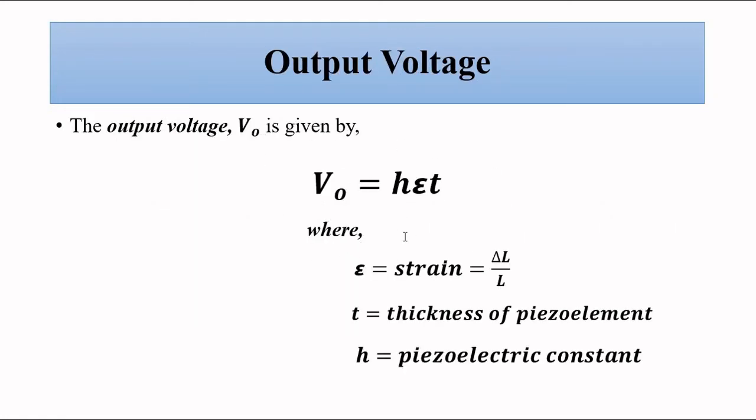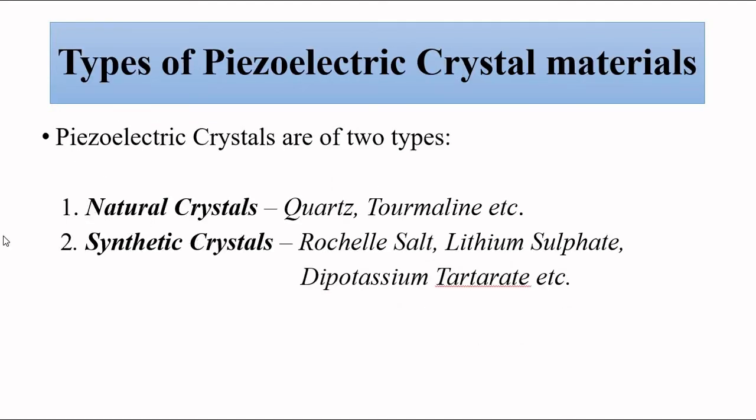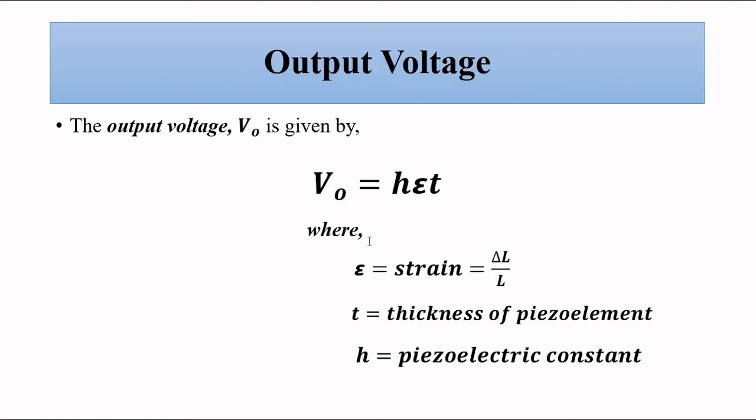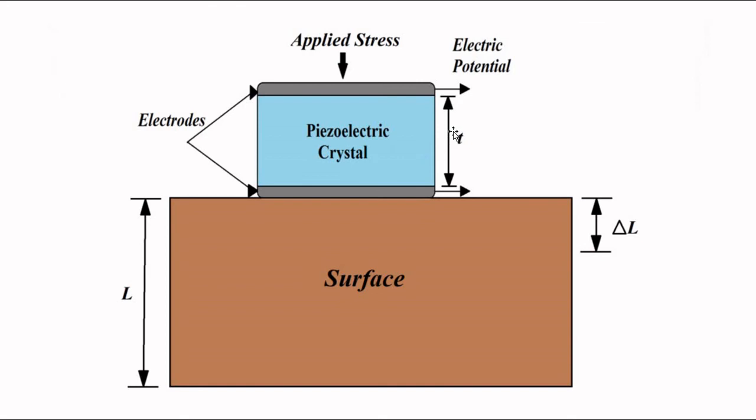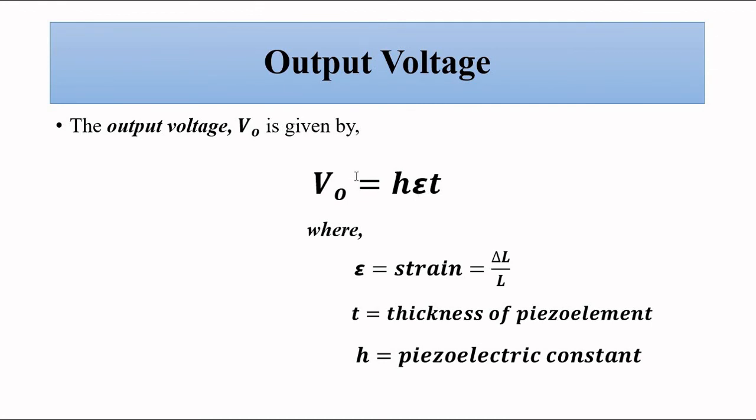The output voltage is given by V = h·ε·t, where h is the piezoelectric constant (which is different for different materials and will be available in the specification sheet), epsilon (ε) is the strain (the change in length delta L divided by the original length capital L), and small t is the thickness of the piezoelectric crystal element. This is very important because we are getting a direct voltage readout which is directly proportional to the strain produced.